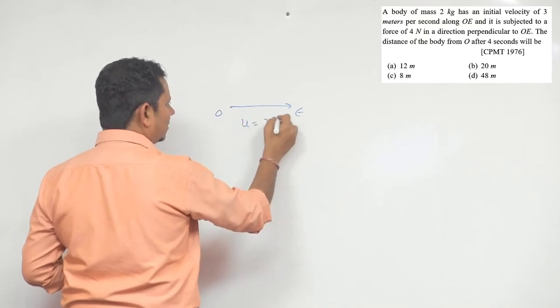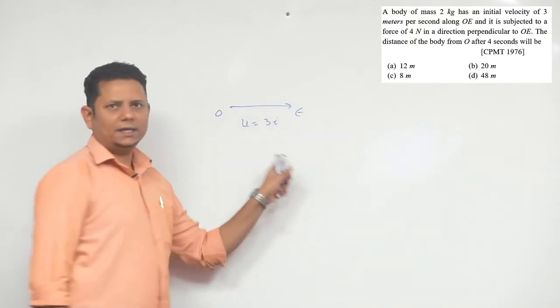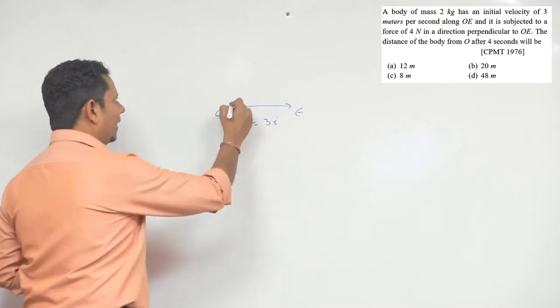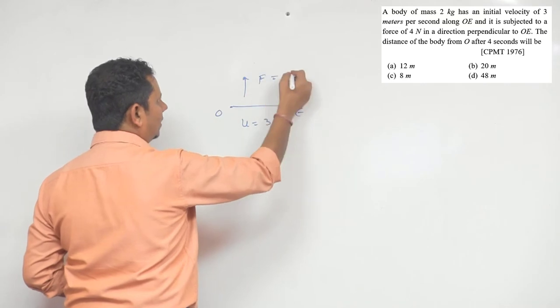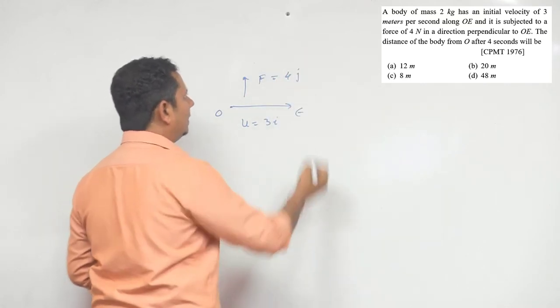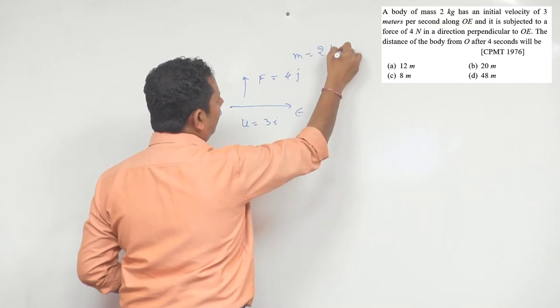Initial velocity is in this direction, 3 meter per second. So we denote this as 3i cap. Your force is applied on this body in this direction. So the force value is 4j cap. And since its mass is 2 kg...